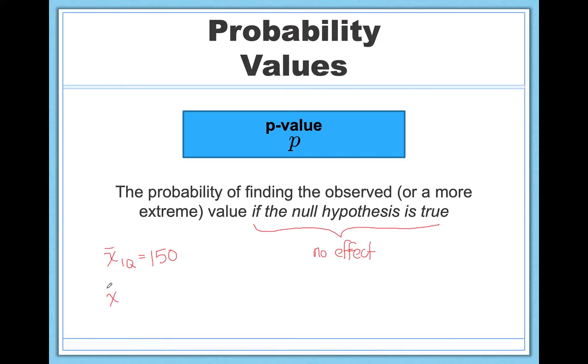If instead we did this study and we got an average IQ score of, say, like 101, this is very likely. Even if the null is true, even if neuro IQ is totally useless, it's totally normal and expected to find average IQs around 100. And this value of 101 is very close to that. And the result is going to be a very large probability value. It's very likely that we'll find this if the null is true.